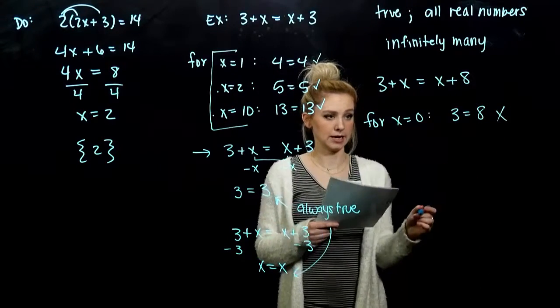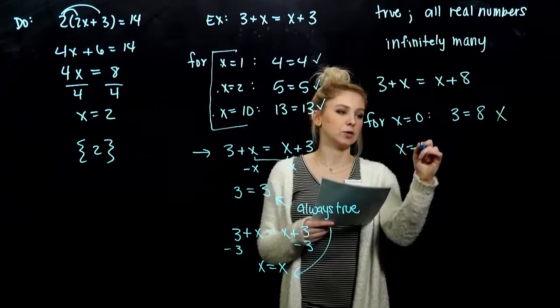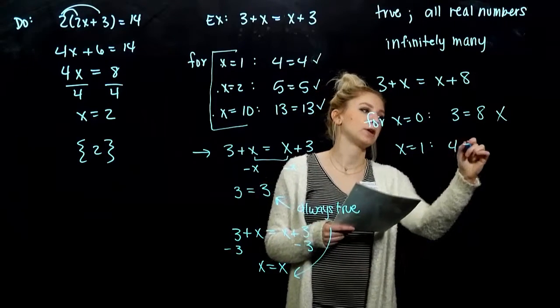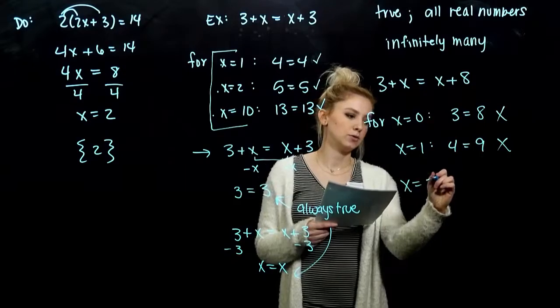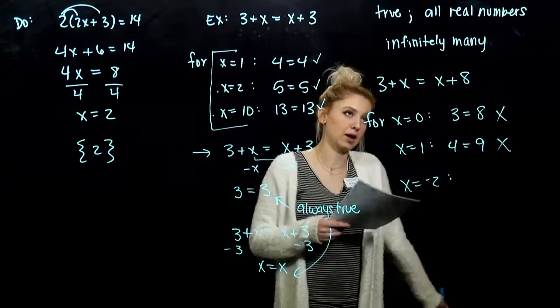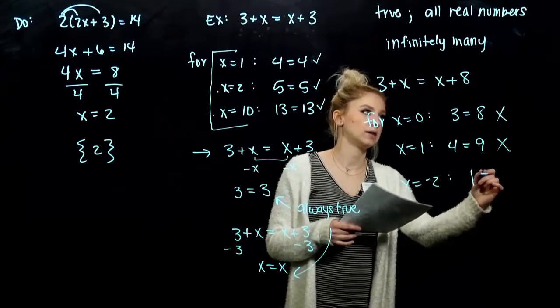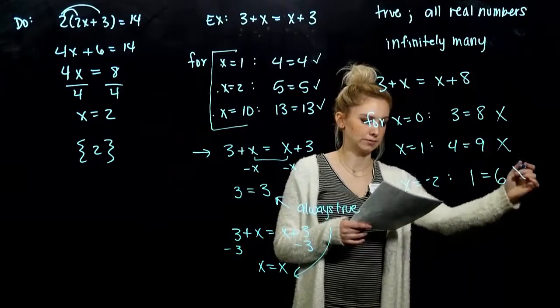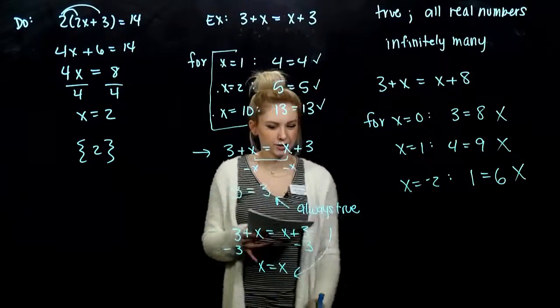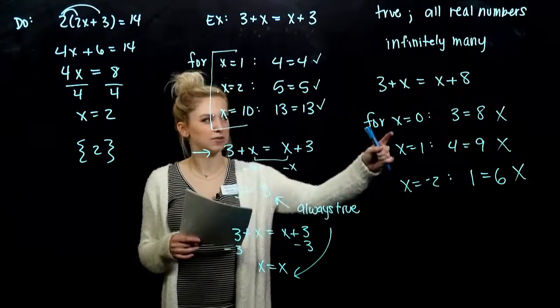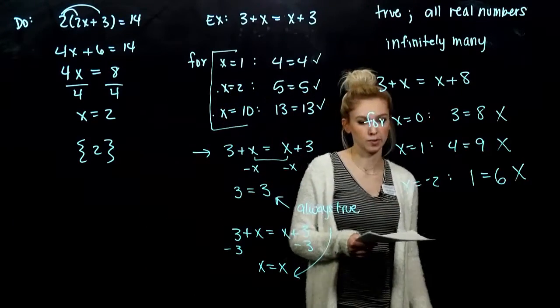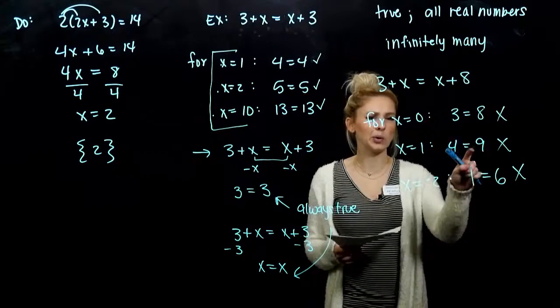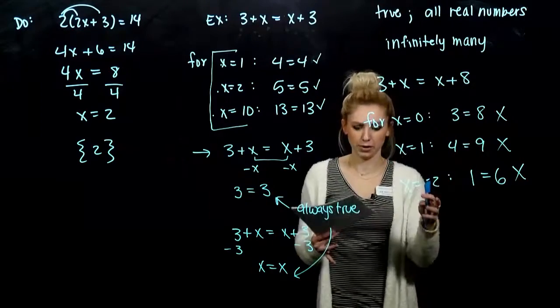x equal to 1: 4 equals 9, also not true. x equal to minus 2, I could throw a negative in there. I get 1 is equal to 6, never true. So again, we're plugging in specific x values. We want to show generically, regardless of what we plug in, this is never going to hold. I can never make 8 equal to 3.